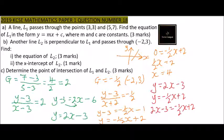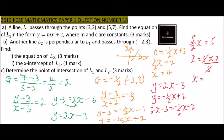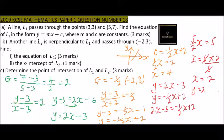Taking -½x to the other side gives 2½x, which is 5/2. Taking -3 to the other side gives 2 + 3 = 5. So 5/2 x = 5. Multiplying by 2 and dividing by 5 gives x = 2. Substituting back, y = 2(2) - 3 = 4 - 3 = 1. So the point of intersection is (2, 1).